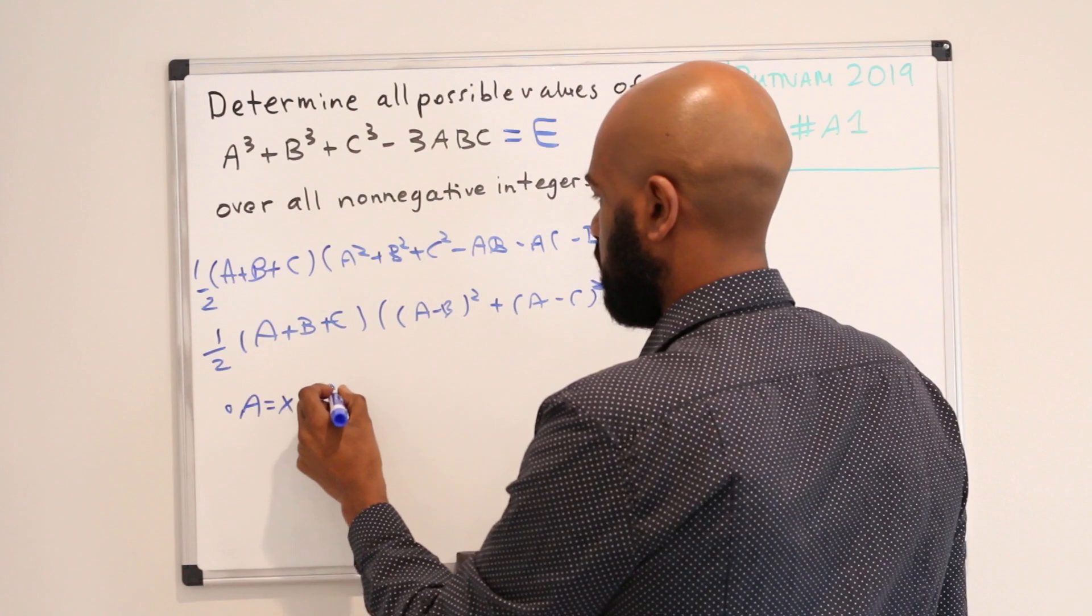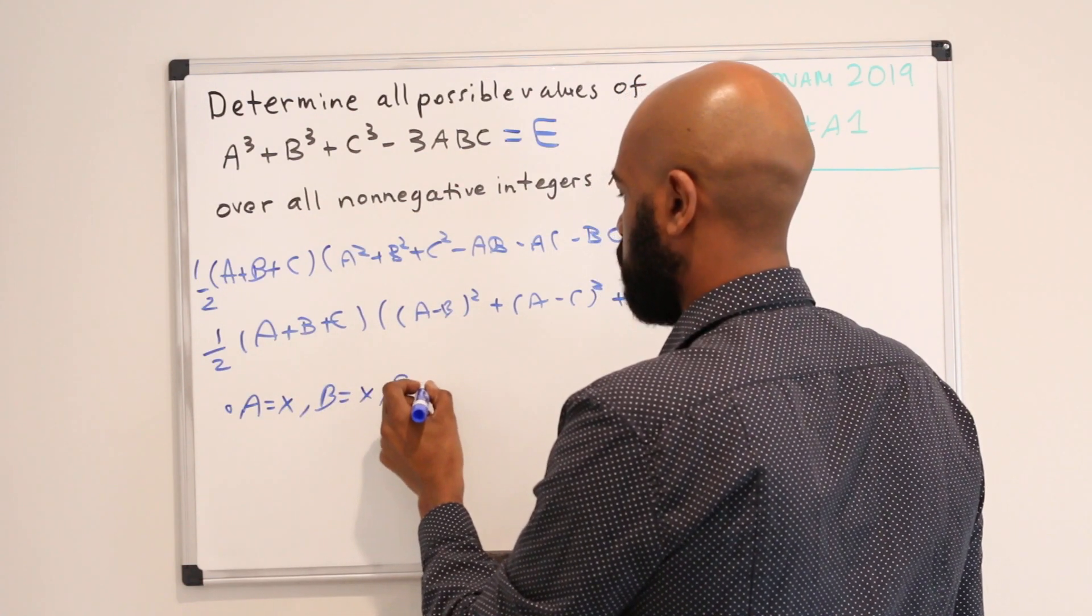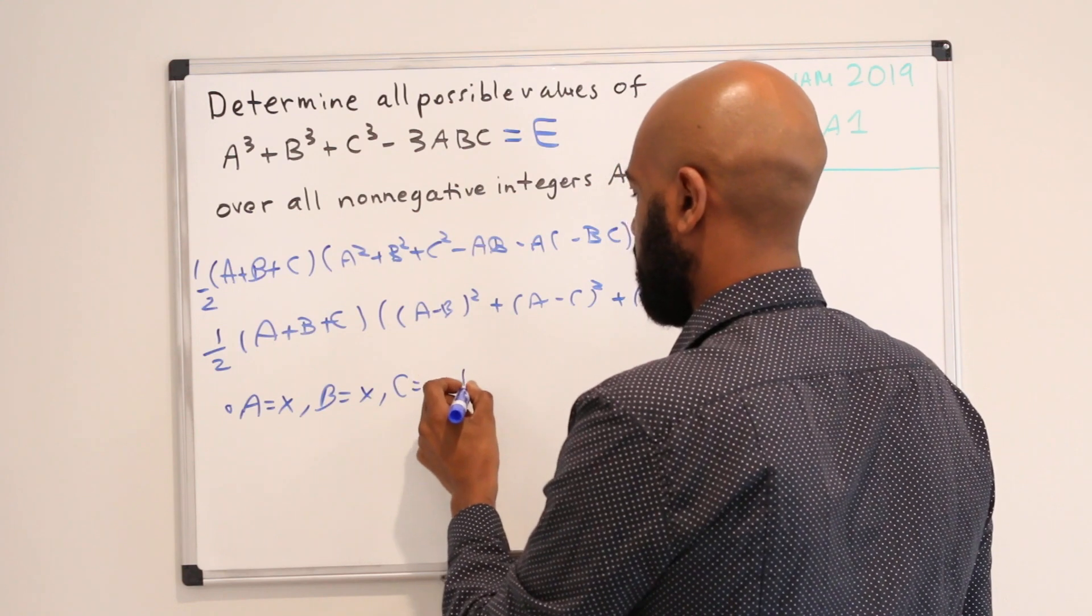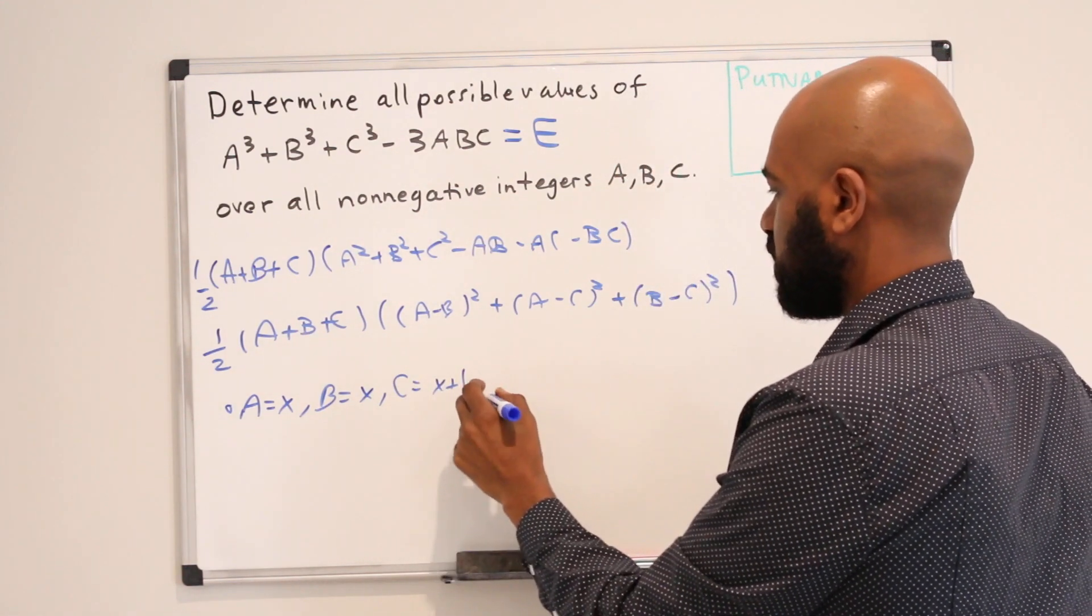Let's let A = X, B = X, and C = X + 1 where X is a random non-negative integer. Okay, so if we do that then